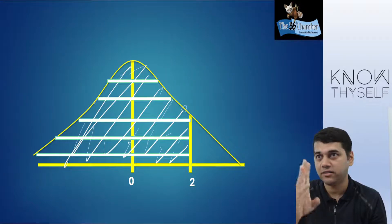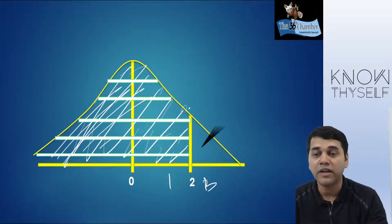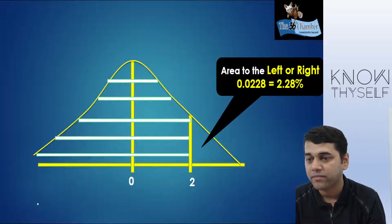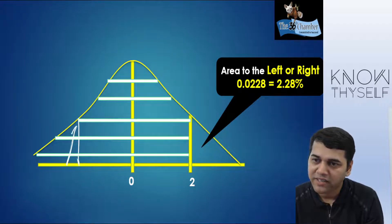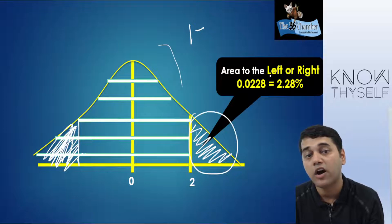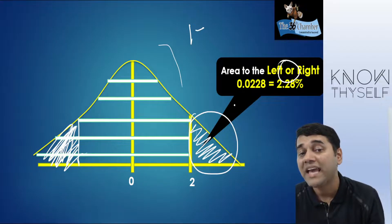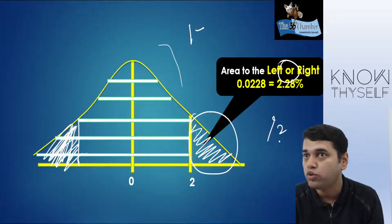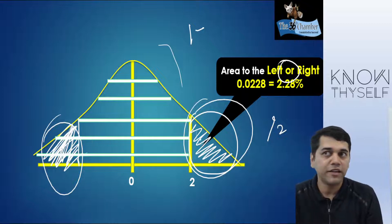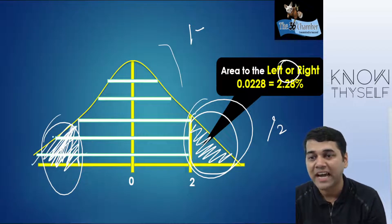There can be three possibilities in the examination. They will give you cumulative area — no headache. Or they will give area to the left or right — take any one value, minus it from 1, and you get the cumulative. Because the entire table is considered as 1. Sometimes they will give you left and right together — then divide by 2 to get one side, then 1 minus that for the cumulative.